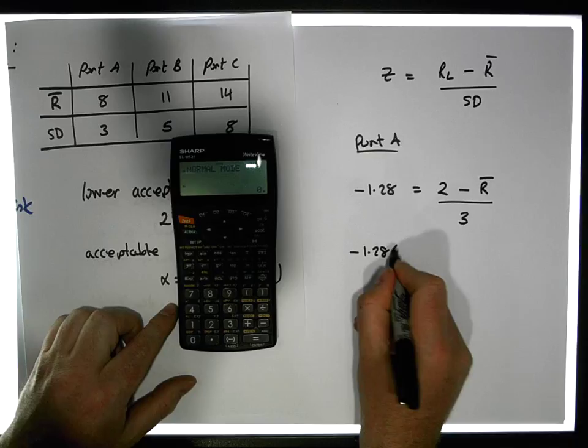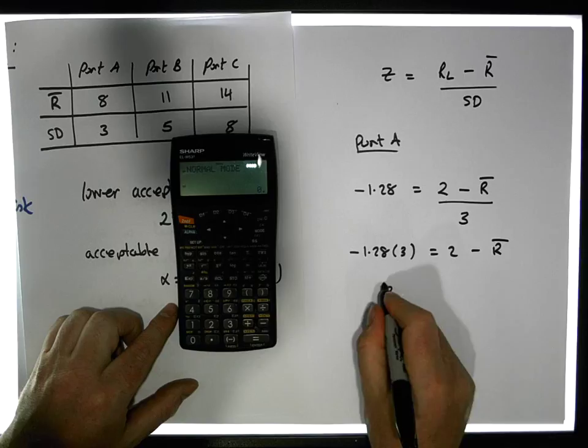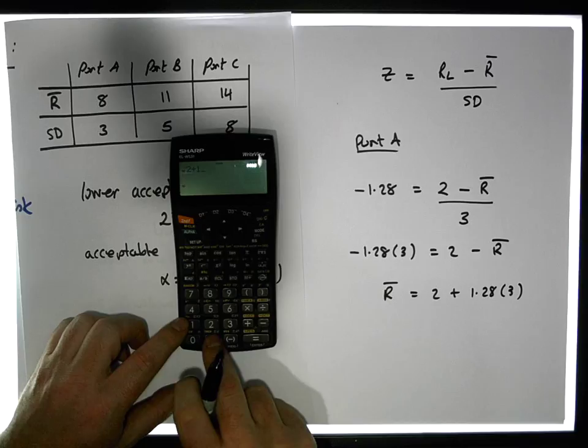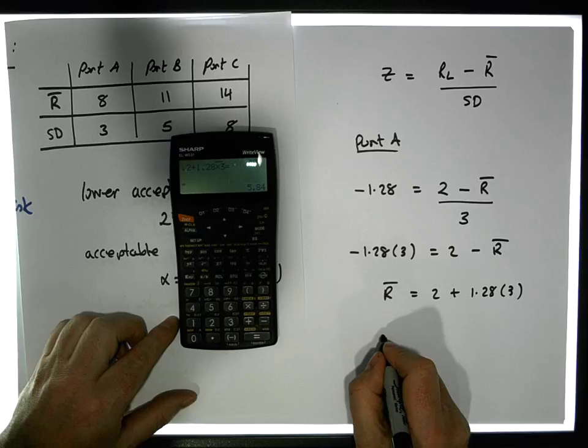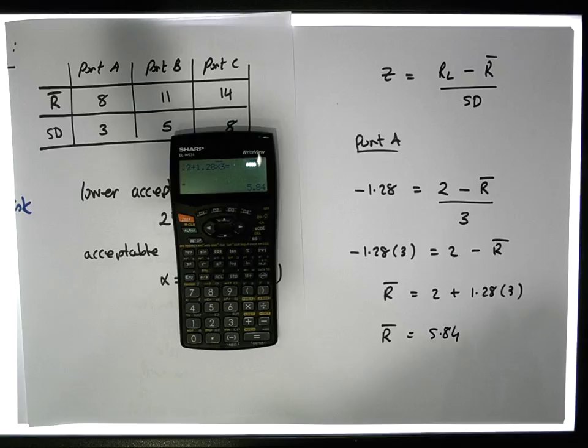So when I bring R̄ over, R̄ is equal to 2 plus 1.28 times 3. That gives us an expected value of 5.84% — so 5.84% is what we would require.